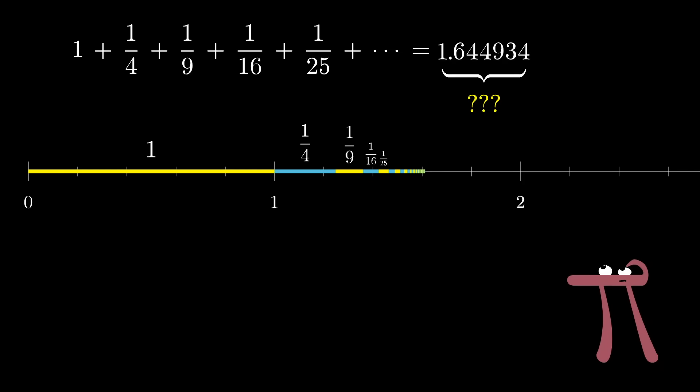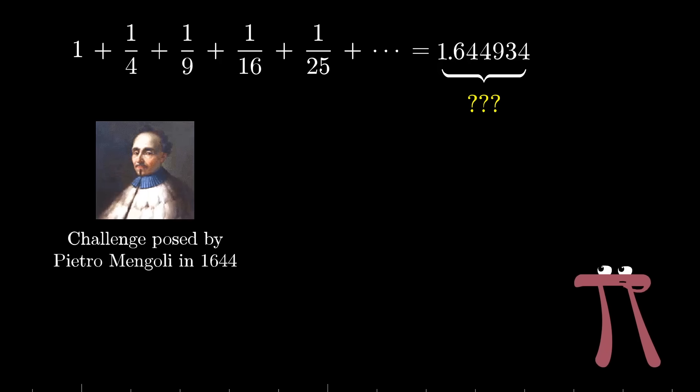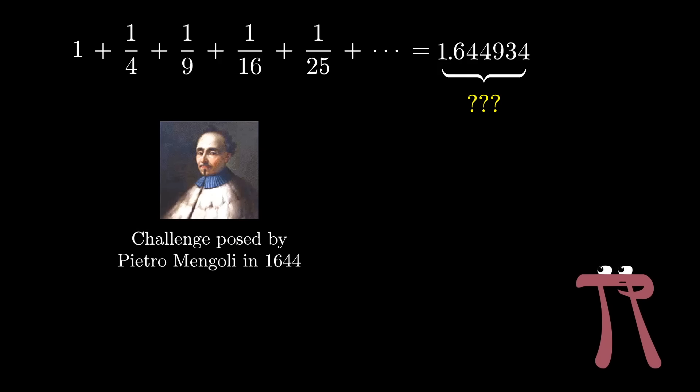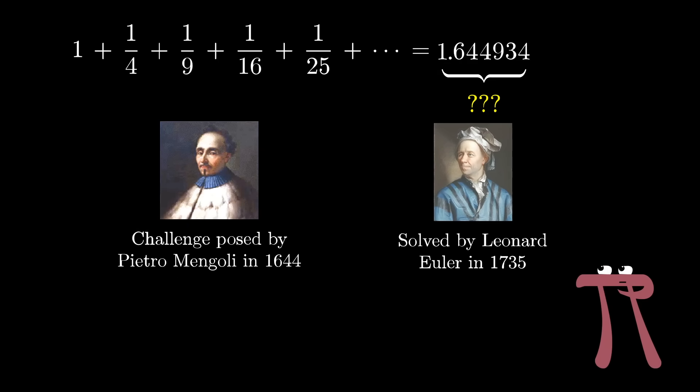Now this is a challenge that remained unsolved for 90 years after it was initially posed until finally Euler found the answer, super surprisingly, to be pi squared divided by 6. I mean isn't that crazy? What is pi doing here? And why is it squared? We don't usually see it squared.